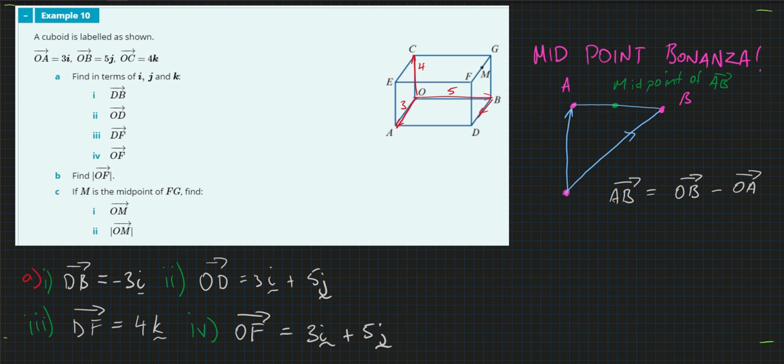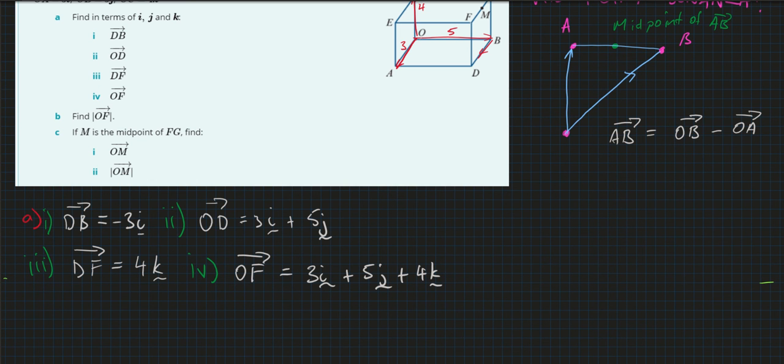And part four is O to F. So we're going to move O to D plus D to F, which is 3i plus 5j plus 4k. So the magnitude of O to F is just equal to the square root of 3 squared plus 5 squared plus 4 squared equals 5 times the square root of 2.